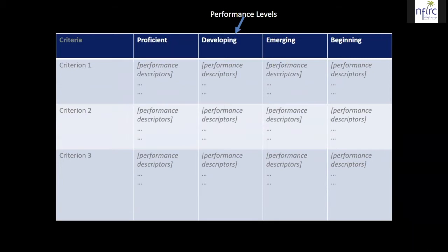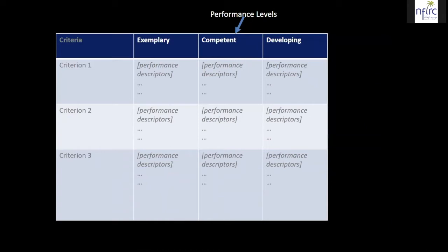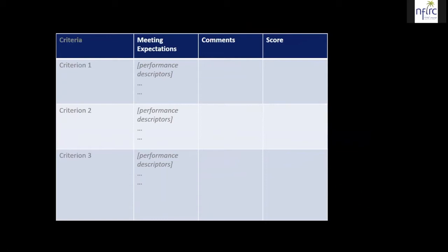I can give you a couple more examples of performance level labels. For example: beginning, emerging, developing, proficient. Yet another: beginning, developing, accomplished, exemplary — if you want to capture the upper end of performance. And this one is funny: you're fired, needs work, adequate, professional — more like judging professional performance. All examples shown have four levels, but that doesn't have to be. It can be three levels — developing, competent, exemplary. Or even fewer; you can simply describe what meets expectations, and that can be very helpful to students, better than having nothing at all.